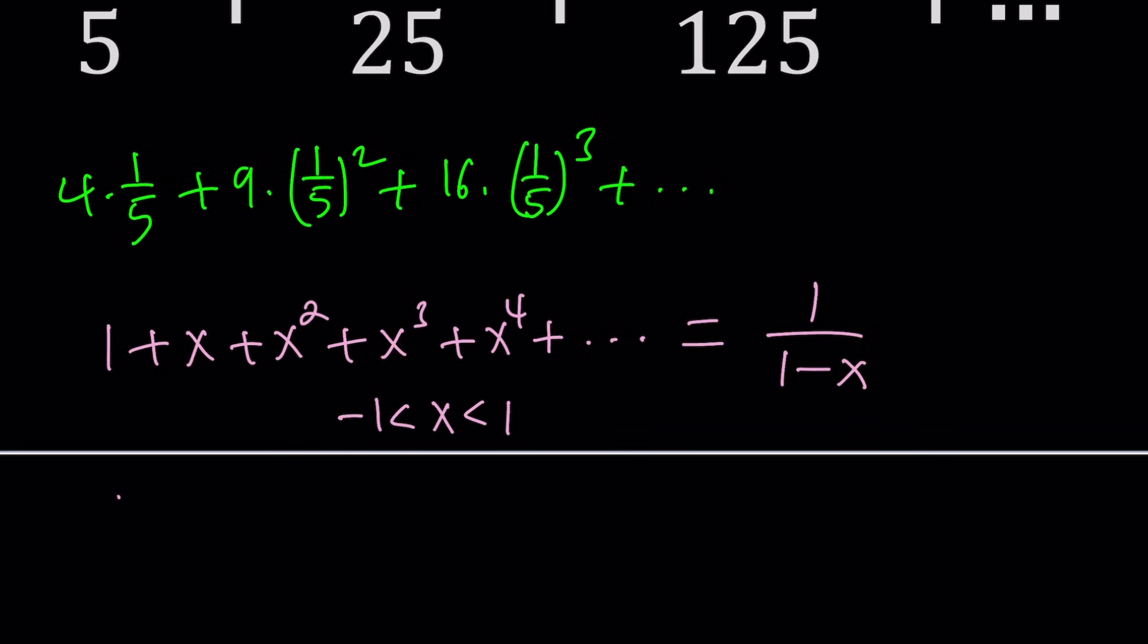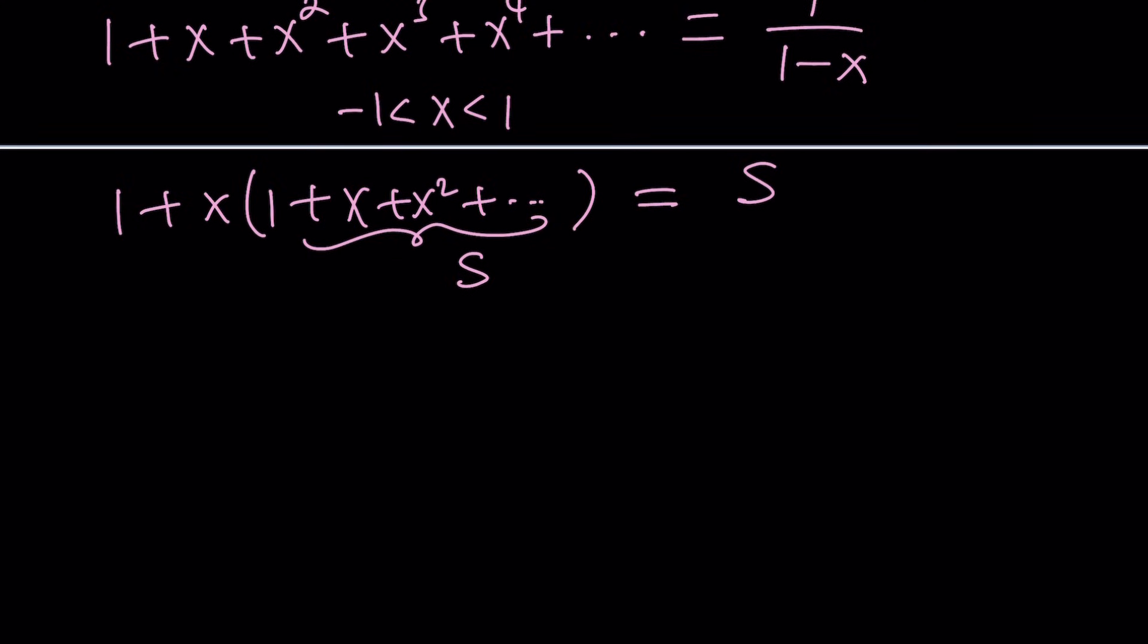You can go ahead and factor out an x here. And then notice that this expression contains itself. So if you called it s, this would also be s and solve for s. You're going to get the exact same thing. You get the idea? Very easy to prove. So, but that's just the beginning of the story. We have a story to tell you. Okay.